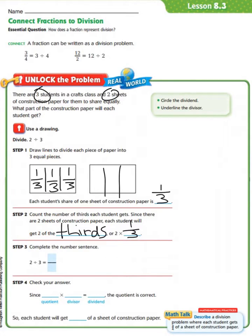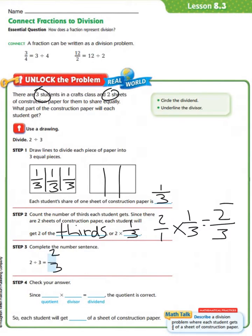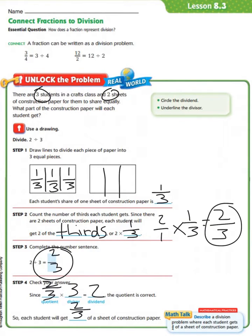Now let's look at step 3 — complete the number sentence. 2 divided by 3 equals 2 thirds. Going back, it says 2 times 1 third. If we solve that out, 2 over 1 times 1 third equals 2 times 1 is 2, and 1 times 3 is 3, so we get 2 thirds. Since 2/3 times 3 equals 2, the quotient is correct. Each student will get 2 thirds of a sheet of construction paper.